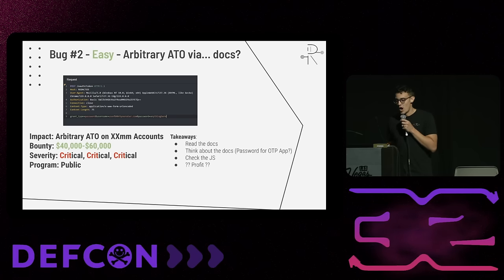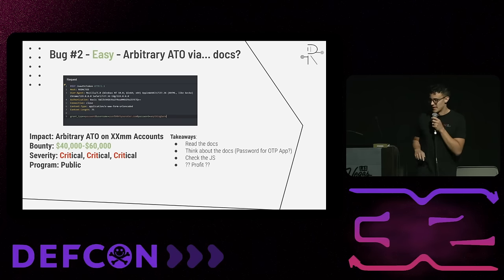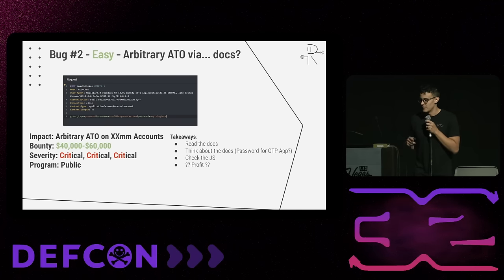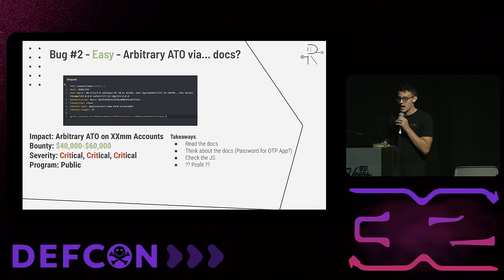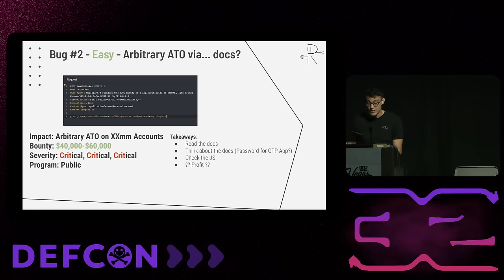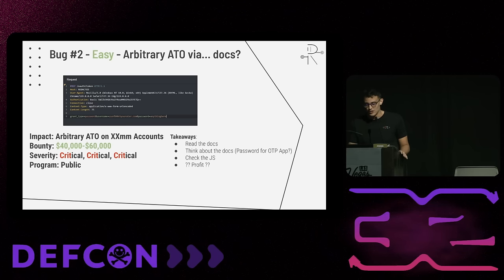This was an arbitrary ATO on double-digit million accounts, 40 to 60K bounty, critical, on a public program. Takeaways: read the docs, think about the docs, and check the JS — because there's a lot of good stuff in there.